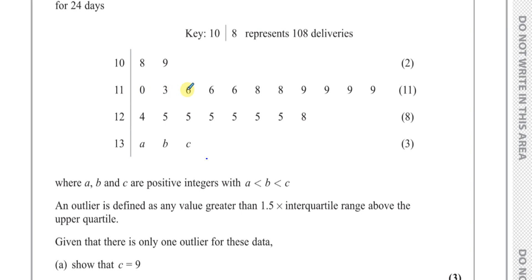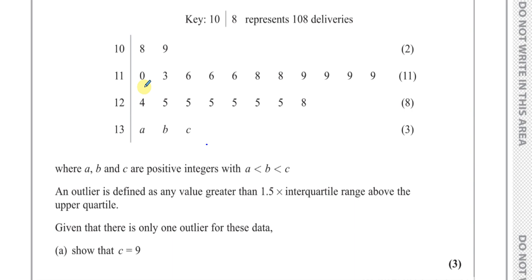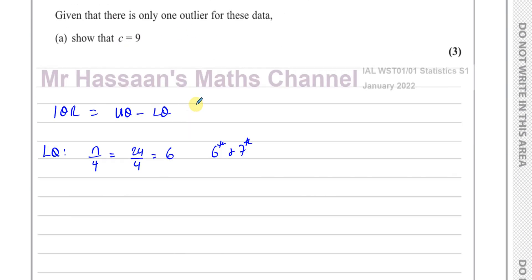Counting through entries 1 through 6, the 6th and 7th entries are both 116. So Q1, the lower quartile, is equal to 116.